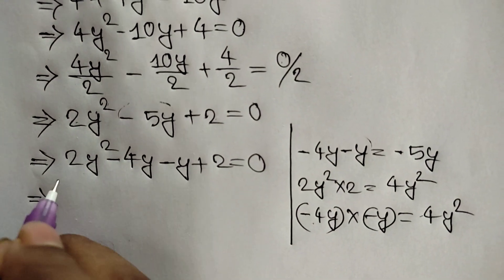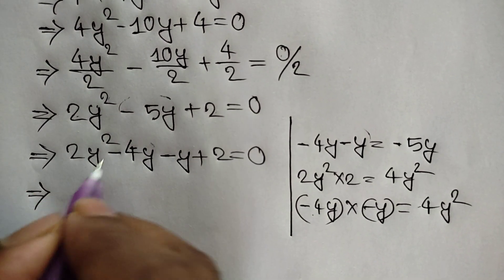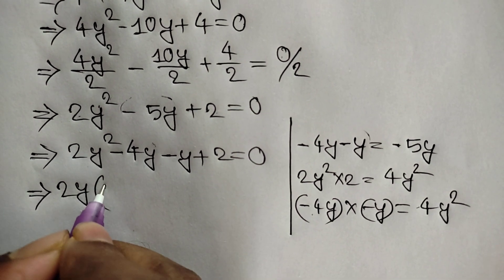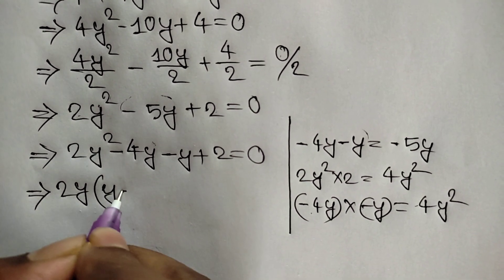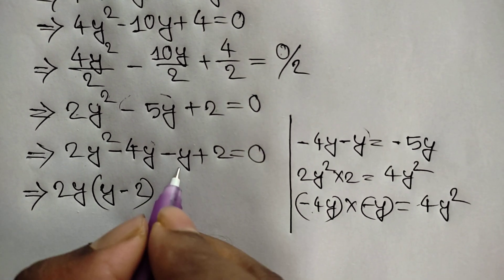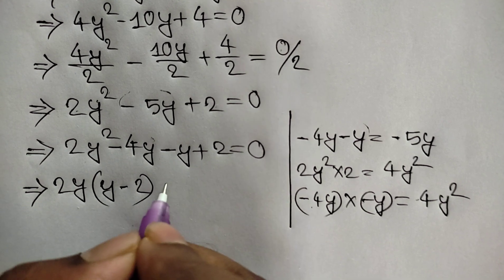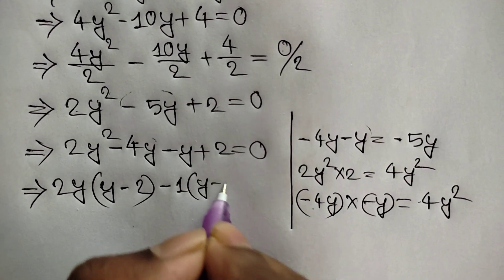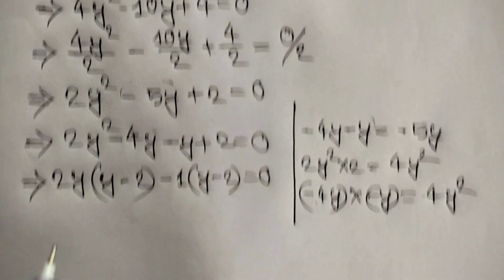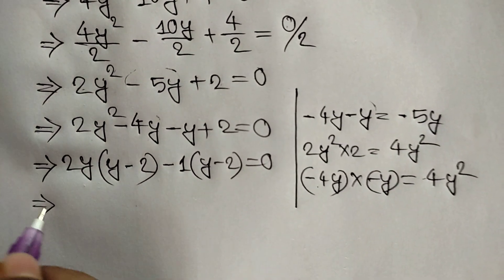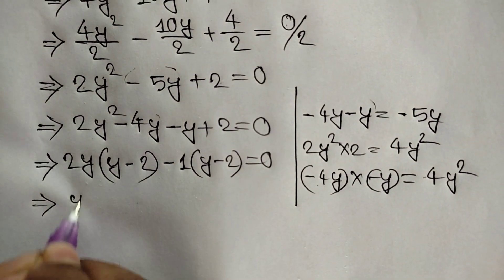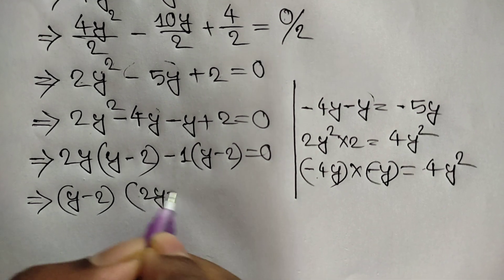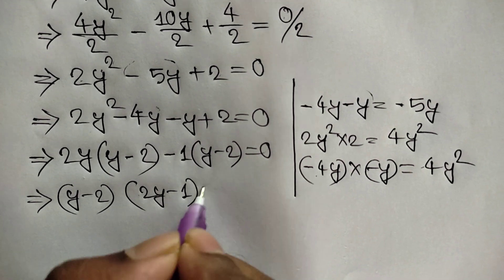Taking common factor 2y from the first two terms, we get 2y bracket (y minus 2). Taking common factor negative 1 from the last two terms, we get negative 1 bracket (y minus 2) is equal to 0. Taking (y minus 2) as common, we get (y minus 2)(2y minus 1) is equal to 0.